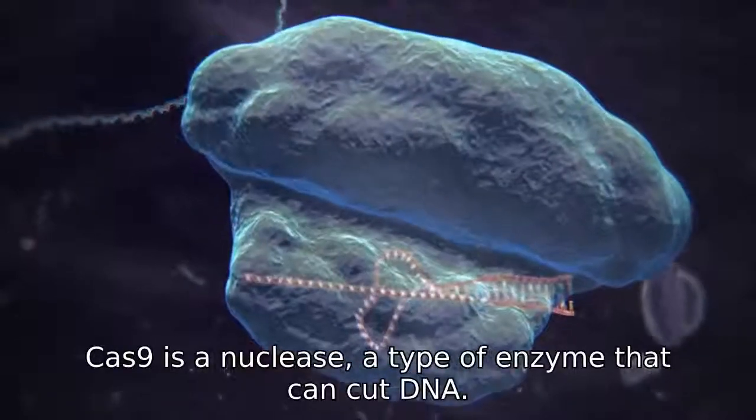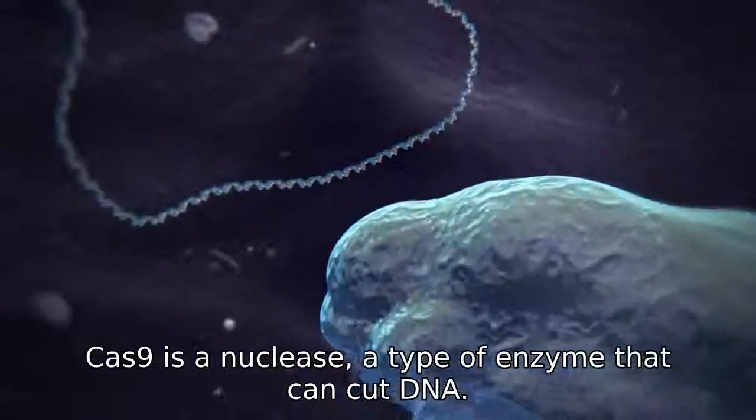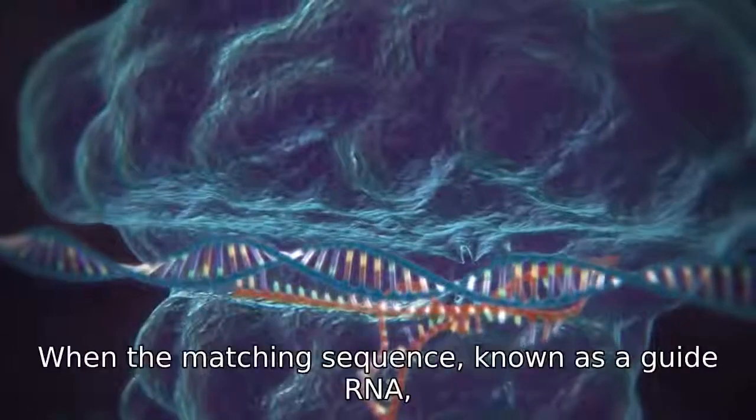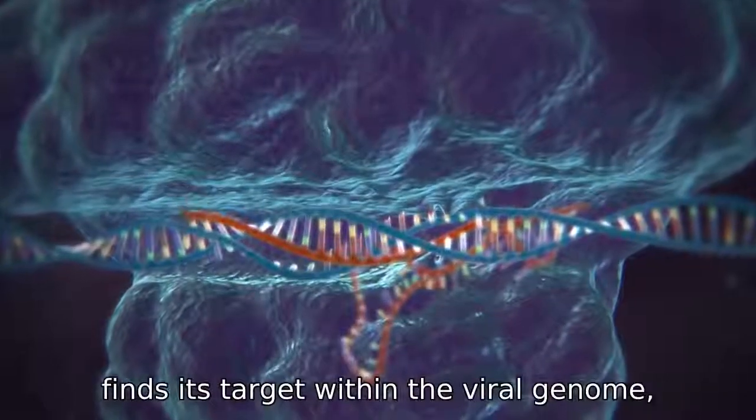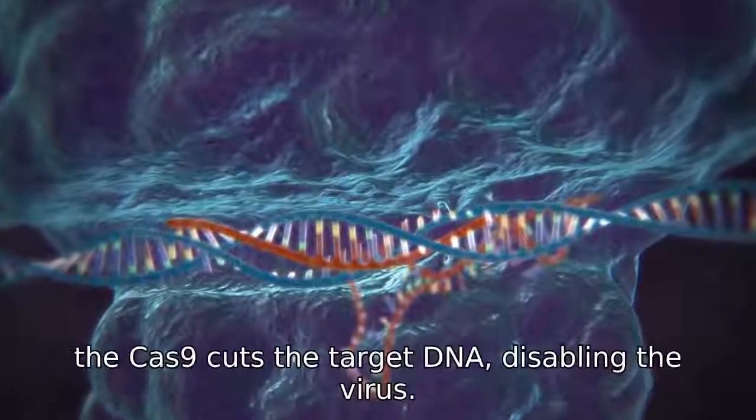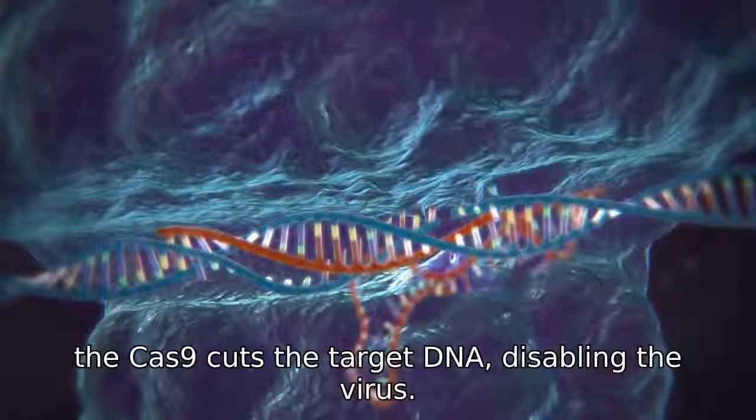Cas9 is a nuclease, a type of enzyme that can cut DNA. When the matching sequence, known as a guide RNA, finds its target within the viral genome, the Cas9 cuts the target DNA, disabling the virus.